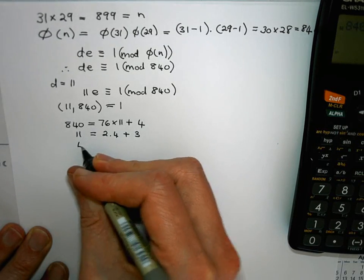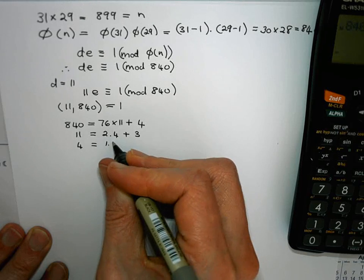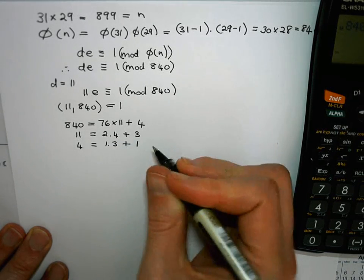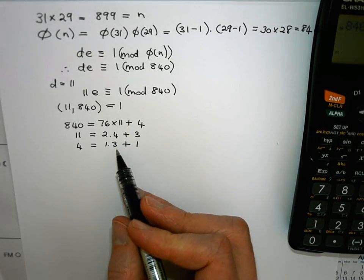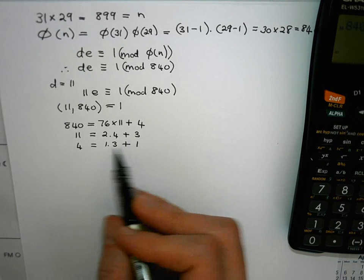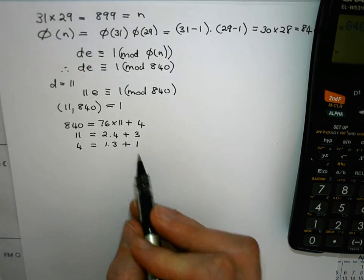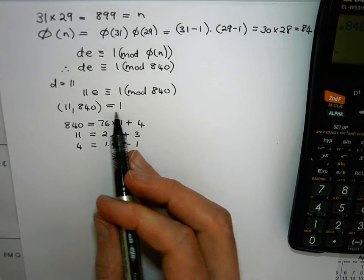I'm now going to divide 4 by 3. Well it's 1 times 3 plus 1. Then of course in the next round I will divide 3 by 1 and it will go in without remainder. So here I've got my 1 which I know is the GCD.